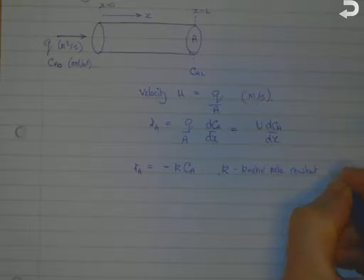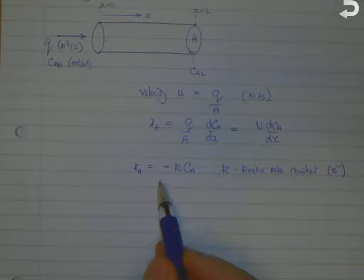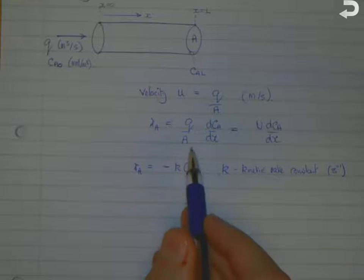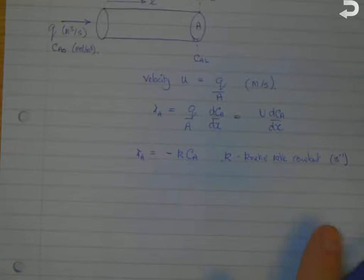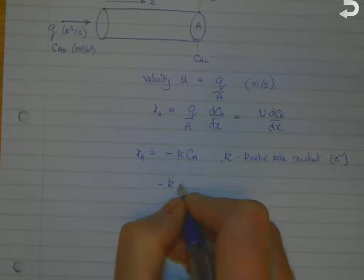Because it's a first-order reaction, the rate constant has units of seconds to the minus one. So we can substitute this into the earlier equation and we get that minus K times C_A is equal to u dC_A by dx.